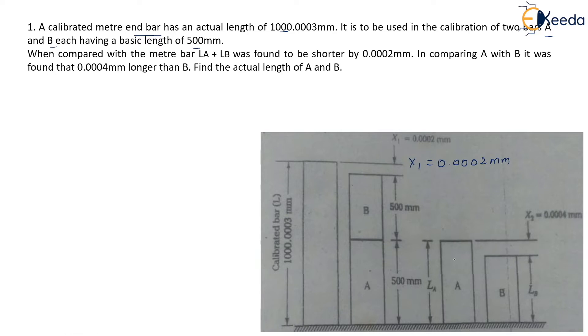Now when we compare these two bars that is bar A and bar B, we see that bar A is found longer than bar B. How long it is? It is denoted by x2 that is 0.0004 mm.